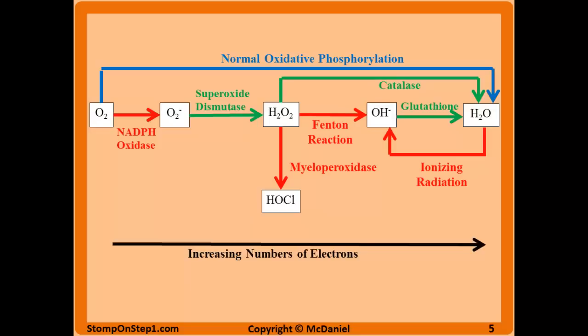Another similar immunodeficiency is MPO deficiency, which prevents neutrophils from creating HOCl.